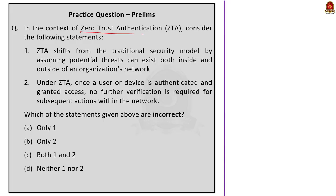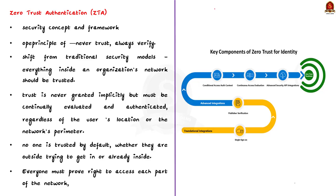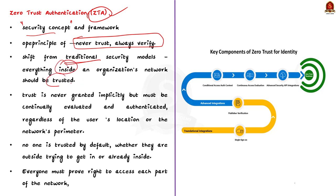In this question, they are asking about zero trust authentication. Zero trust authentication (ZTA) is a security concept and framework that operates on the principle of 'never trust, always verify.' This is a cybersecurity approach which is a significant shift from traditional security models that operated under the assumption that everyone inside an organization's network should be trusted. In contrast, zero trust assumes that trust is never granted implicitly but must be continuously evaluated and authenticated regardless of the user's location or the network's perimeter.